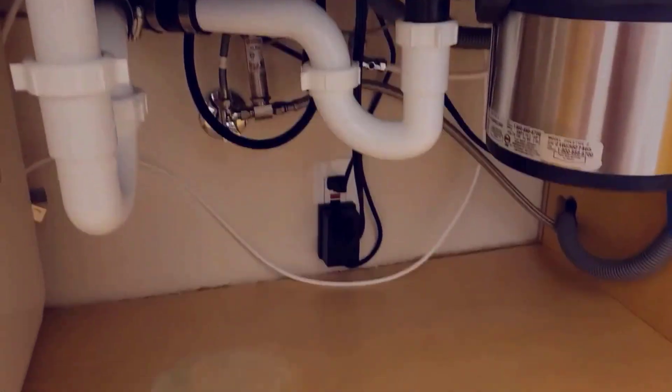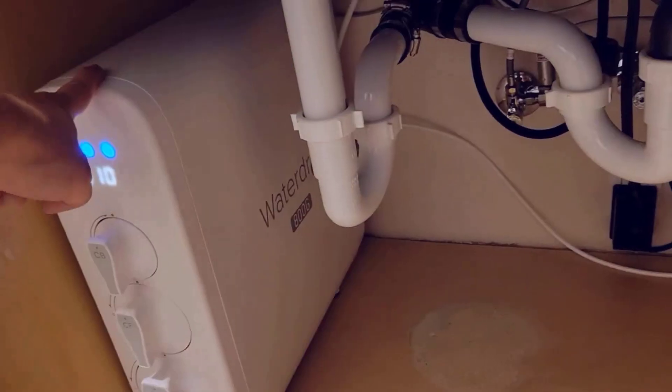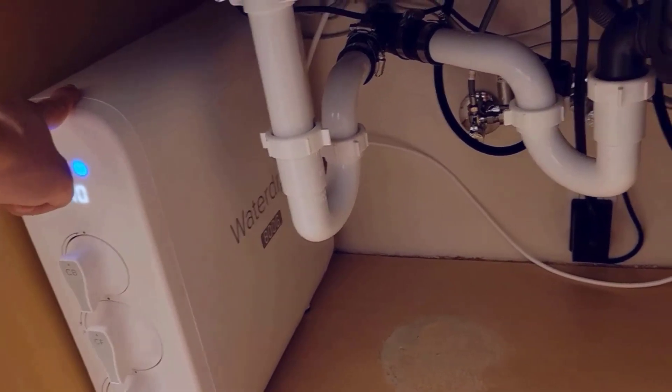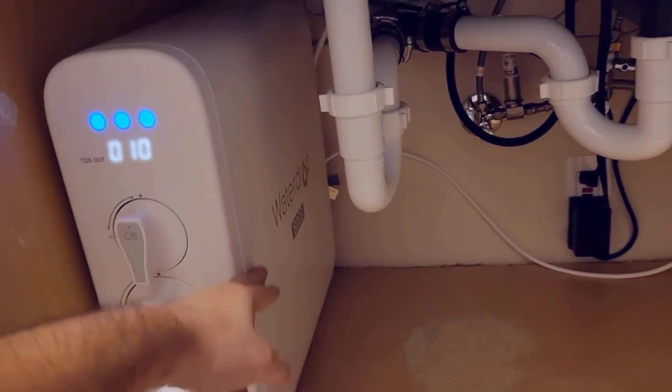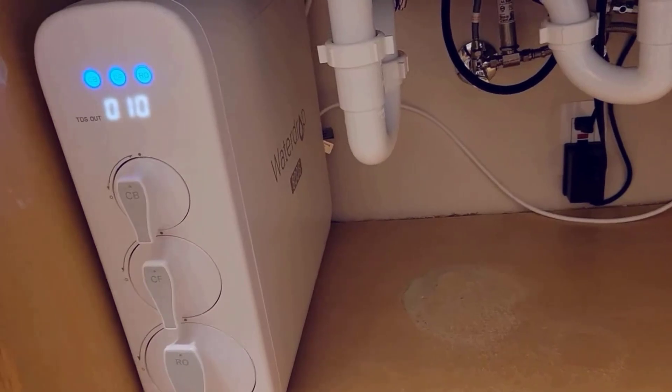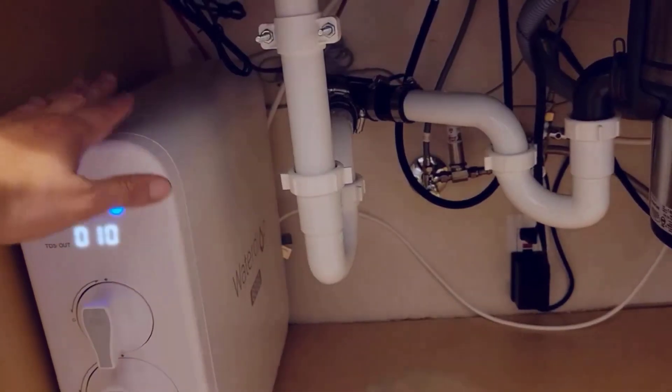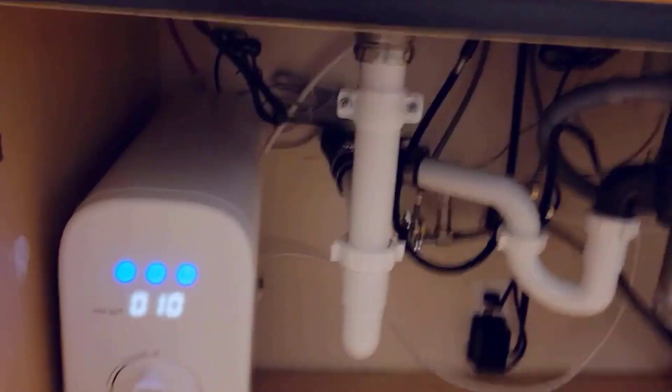When it comes to performance, the G3P800 doesn't disappoint. It uses a combination of advanced technologies, including a high-grade RO, reverse osmosis membrane, and activated carbon filters to remove impurities, contaminants, and odors from your water. During our testing, the water tasted noticeably better, and we could rest easy knowing that harmful substances were effectively removed.